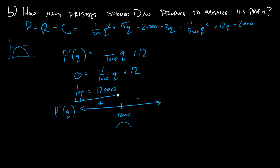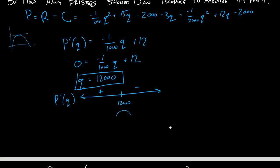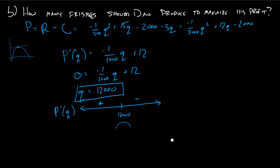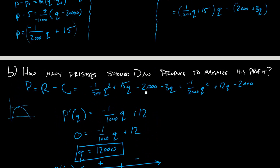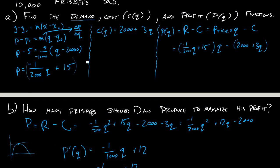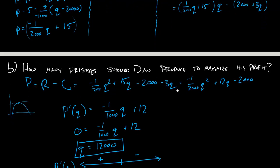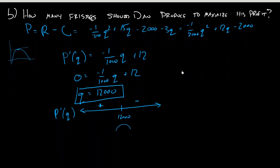So this is the number of Frisbees that I should produce to maximize my profit. Now if you wanted to find the actual profit, you would come back and plug this in to your profit equation. But the problem didn't ask us to do that. We've practiced that in some other ones. But the big idea here was I wanted to maximize my profit. So I wrote out my profit function by finding the things that I needed here, this demand function, the cost function, and the revenue function. And I was able to maximize by taking the derivative and setting it equal to 0.